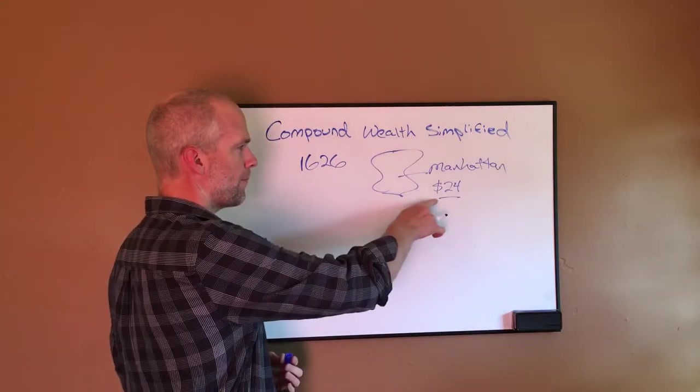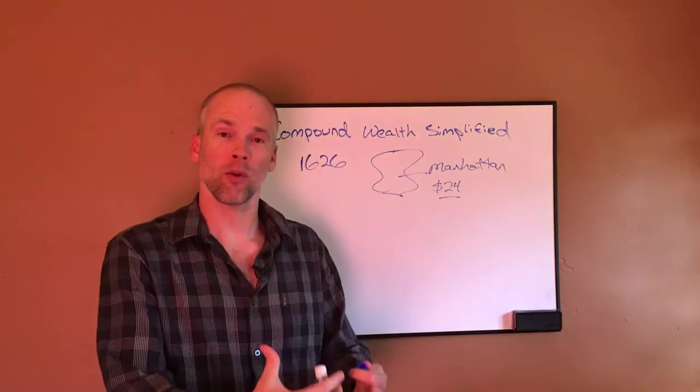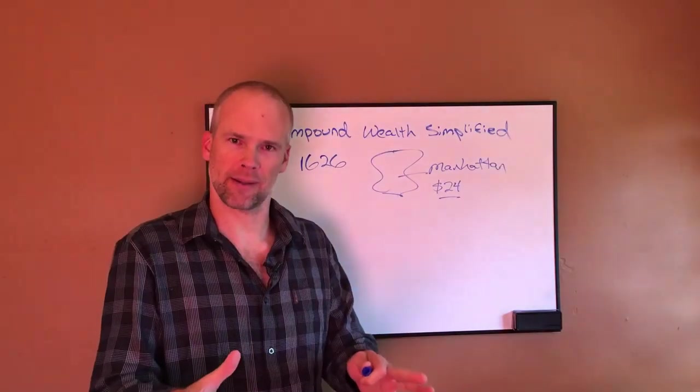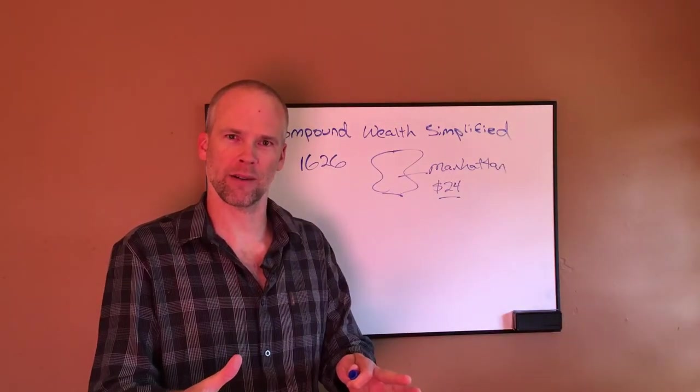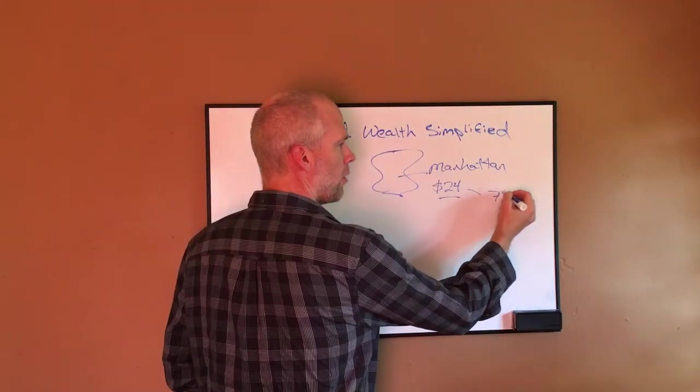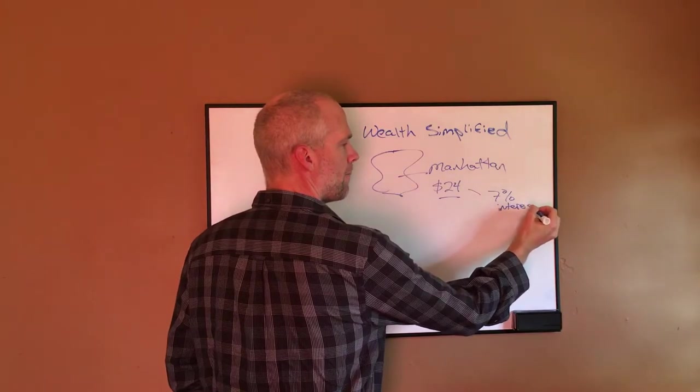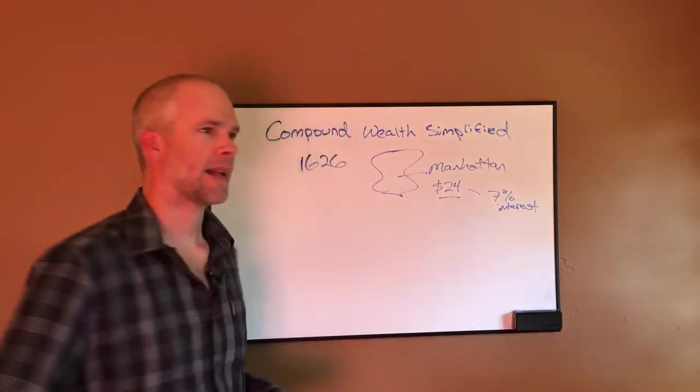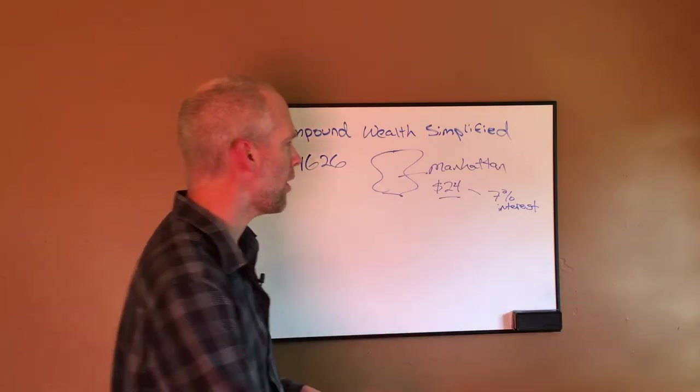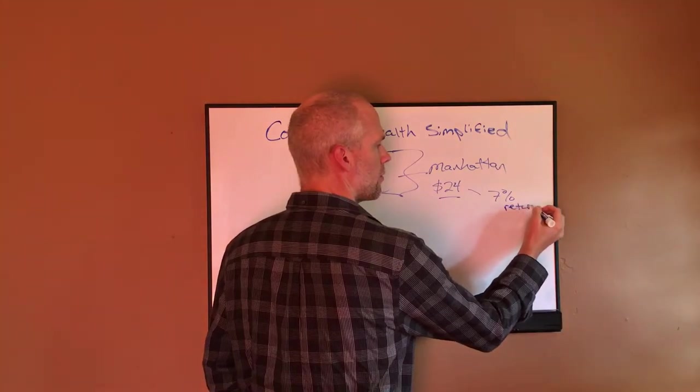Now let's assume the native people have this $24. Let's assume that they have a competent, a semi-competent investment advisor that can grow that $24 at 7%, at a 7% rate of return.